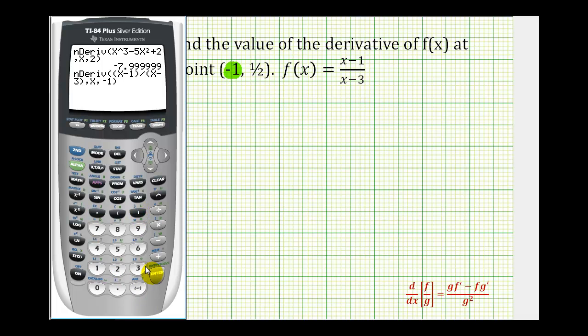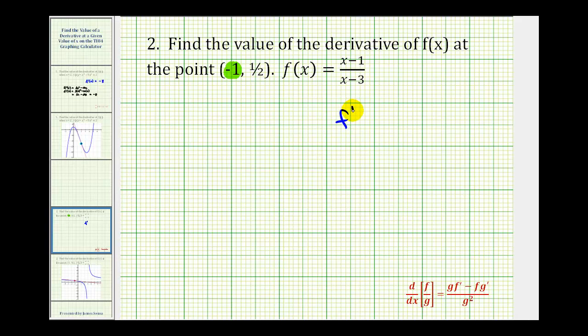Close parenthesis, press enter. Again, the calculator is not perfect. We need to recognize this as negative 0.125. So f'(-1) is equal to negative 0.125.